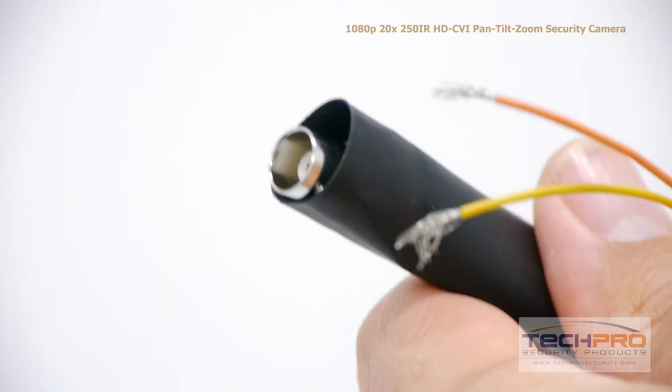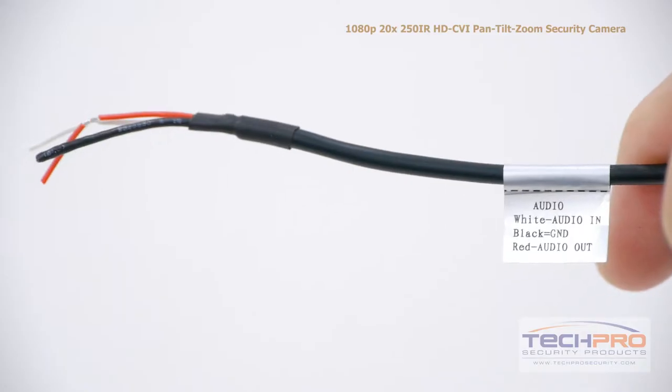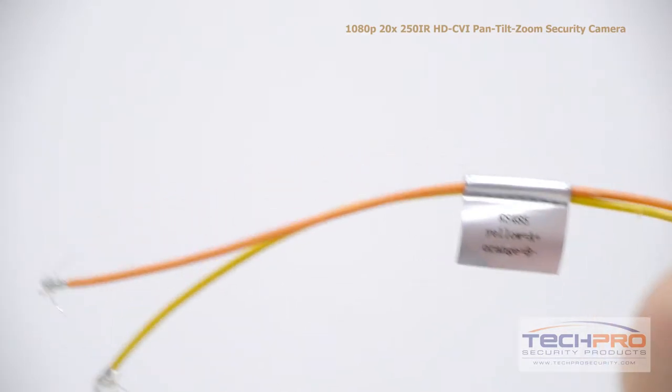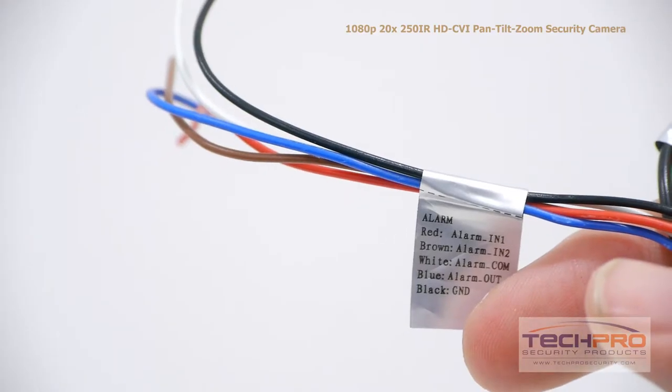The camera has the following connectors: video out, audio in and out, an RS-485 connector, power cables, and alarm input and output.